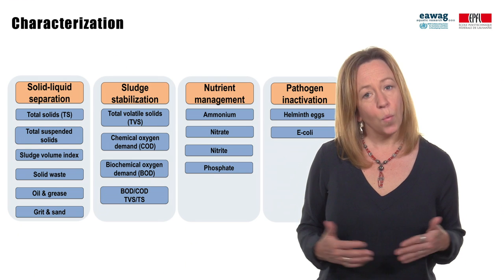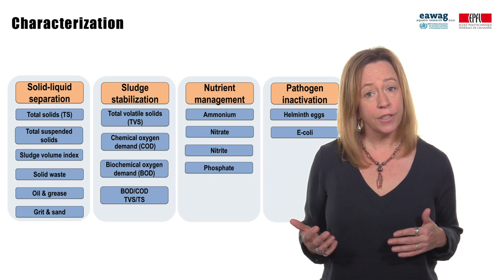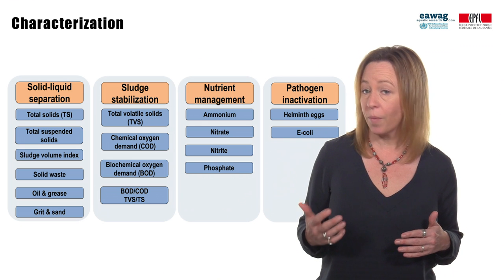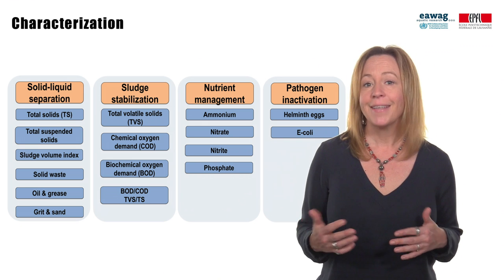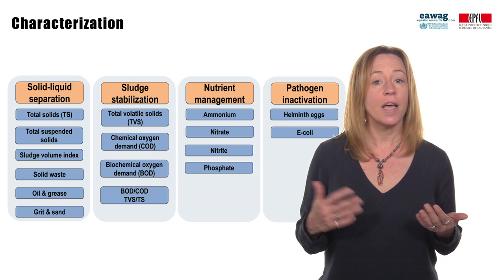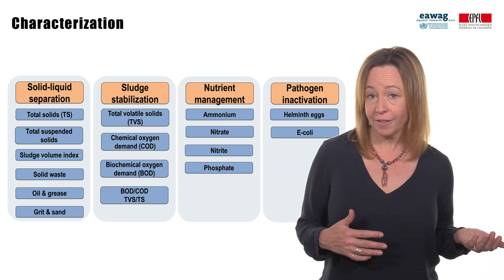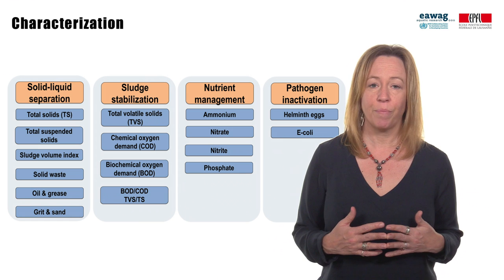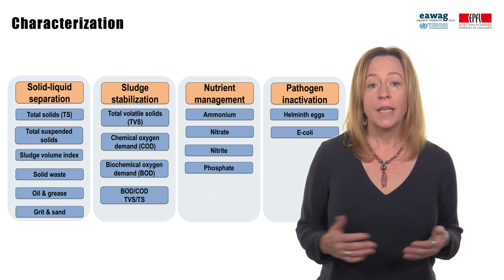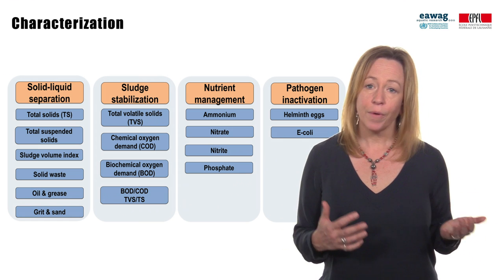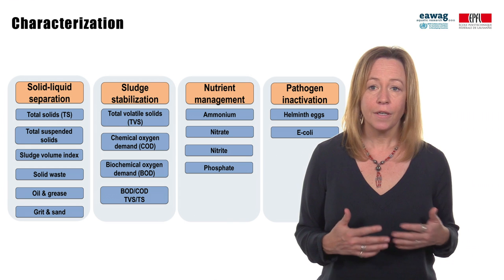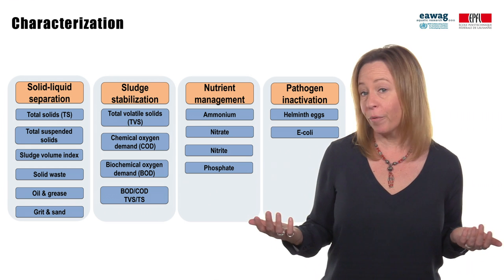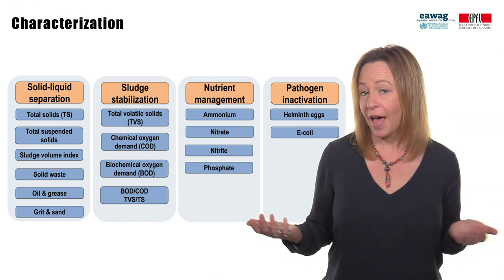You know what parameters of characterization are, can select relevant parameters depending on the management question — such as treatment objectives, type of end use, or collection — and can name important characteristics of treatment products for resource recovery, including irrigation, soil conditioner, compost, fertilizer, solid fuel, liquid fuels, and animal feed. Were you able to download the Sondec or PRG resources?